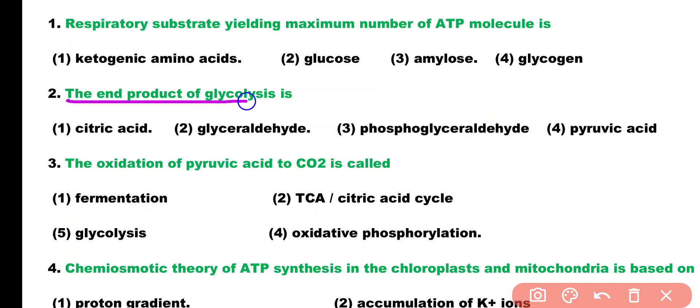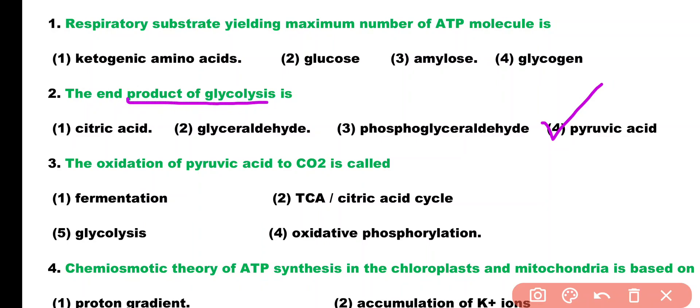Question number 2. The end product of glycolysis is: citric acid, glyceraldehyde, phosphoglyceraldehyde, or pyruvic acid. Correct answer is option 4. Pyruvic acid is the end product of glycolysis.